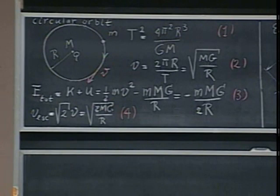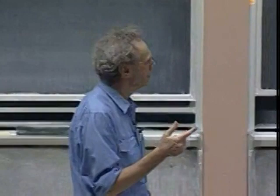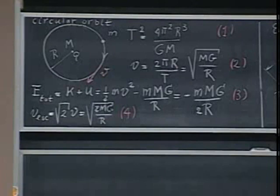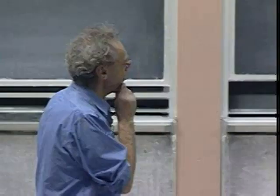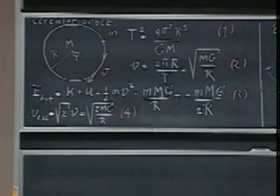We know from equation one how to derive the time it takes to go around. We found that by setting the centripetal force on little m equal to the gravitational force. The velocity — or speed — in orbit follows through the same reasoning. Then we have the conservation of mechanical energy: the sum of kinetic energy and potential energy is a constant, it is not changing.